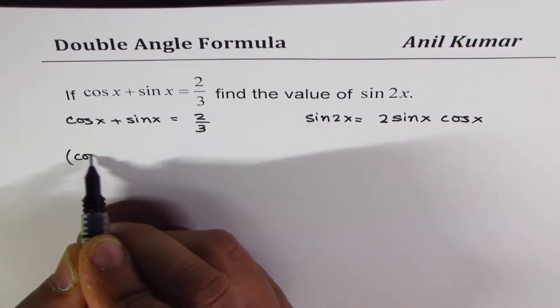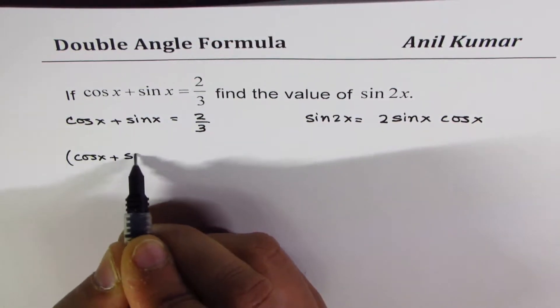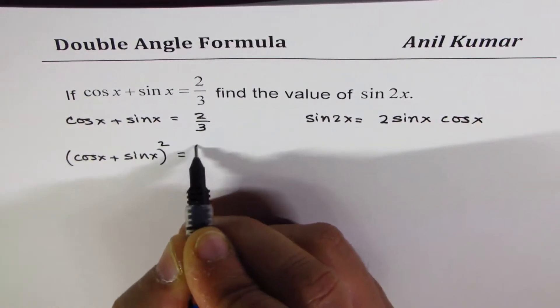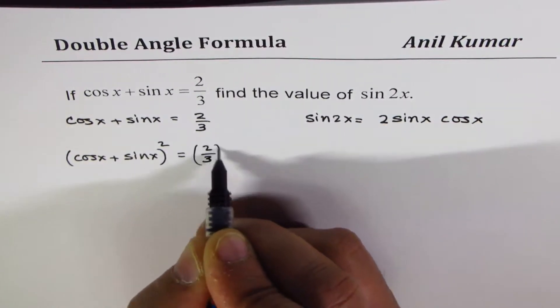If you square both sides, you get cos x plus sin x whole square equals square of 2 over 3, right?